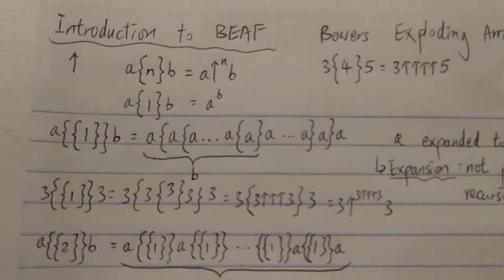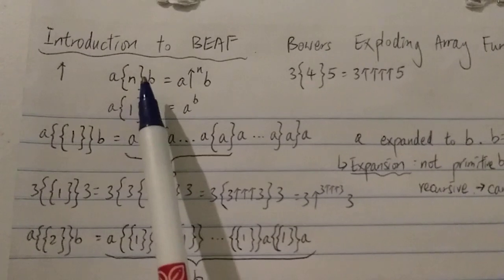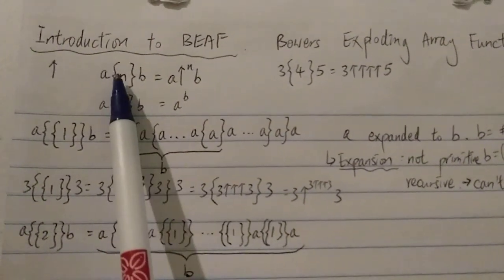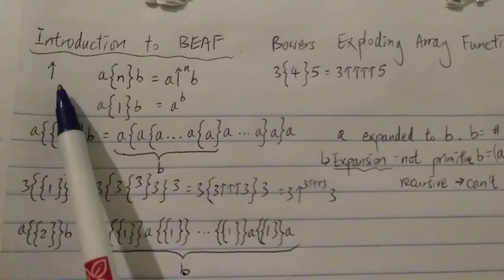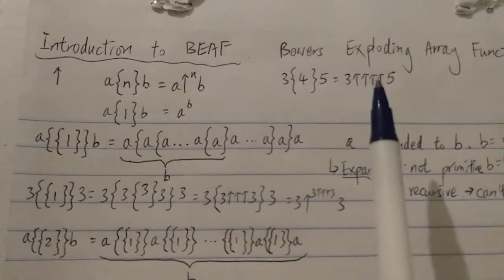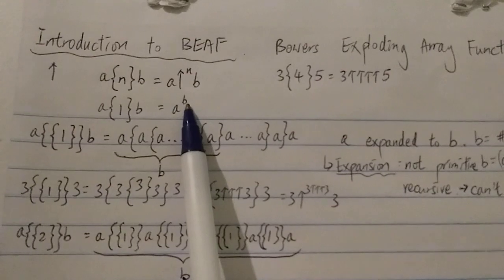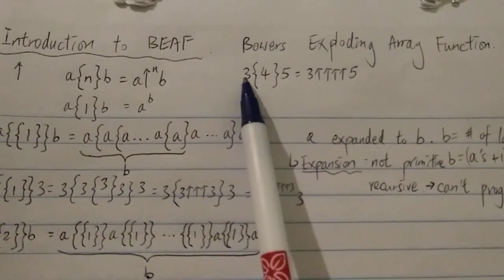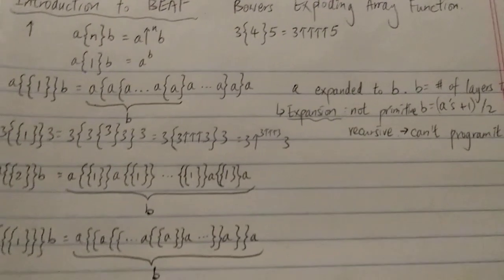I'm not going to talk about the brackets in detail, so basically this is the basic foundation. A bracket N B — this is very straightforward if you understand up arrow notation. It basically means A with N up arrows B. So A bracket 1 B equals A to the power of B, because one up arrow means exponentiation. And 3 bracket 4 5 just means 3 with 4 up arrows 5. So far so good.